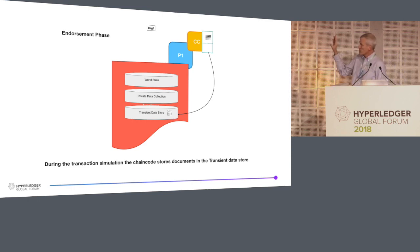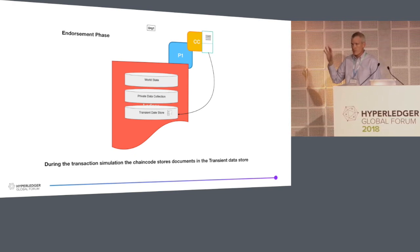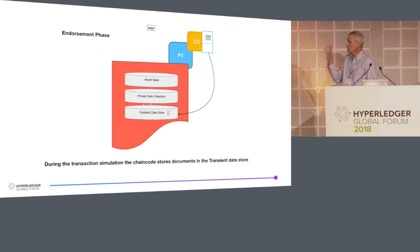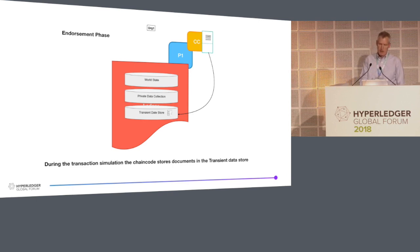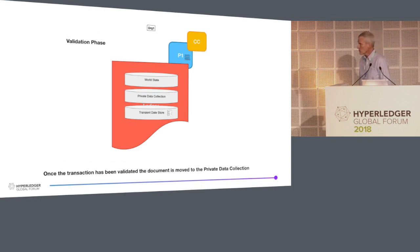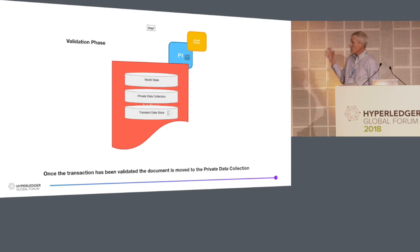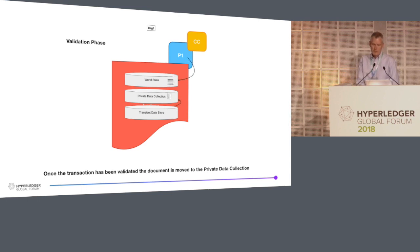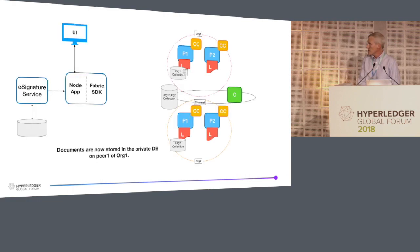The chaincode will respond back to the peer. We'll go through the whole process we talked about before — the peer will send it back to the application, the application will kit up a transaction, that will go to the orderer, and then the orderer will distribute it back to the peers. We come back here to the validation phase. If everything is okay with the transaction, the peer will update the world state, and it'll also move the transient data store into the private data collection.